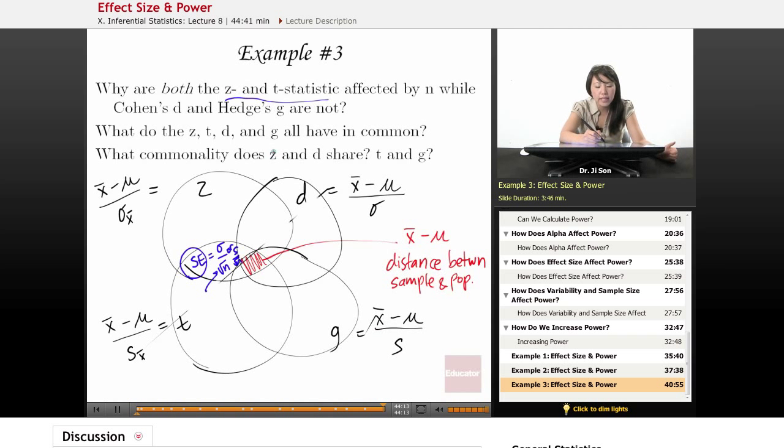So what commonality does Z and D share? Well, that's going to be right in here. So what do they have in common? They both rely on actually having sigma. T and G both rely only on the sample's estimate of the population standard deviation. So looks a little messy, but hopefully this makes a little more sense. All right. Thanks for using educator.com for effect size and power.